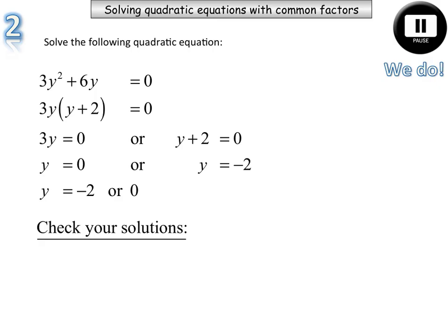Now again, let's just verify that we know that these two are going to be correct, so checking our solutions. Substitute 0 into our expression, and we end up getting 3 times 0 plus 6 times 0. That is 0, so that's true.